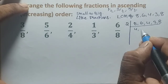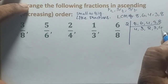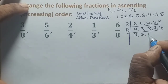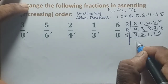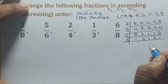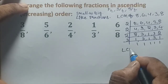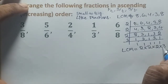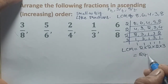Starting the LCM calculation: divide by 2 — we get 4, 3, 2, and cannot divide 3. Divide by 2 again — we get 2, cannot go, 1, cannot go, 2. Divide by 2 again — we get 1, cannot go, 1, cannot go, 1. Now 3 table is possible: 1, 1, 1, 1, 1. Therefore LCM equals 2 × 2 × 2 × 3, that is 2 to 4, 4 to 8, 8 times 3 equals 24. The LCM is 24.